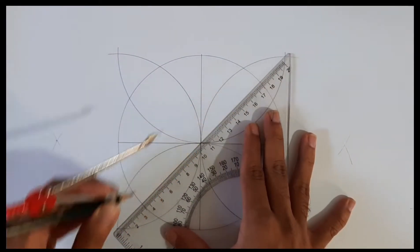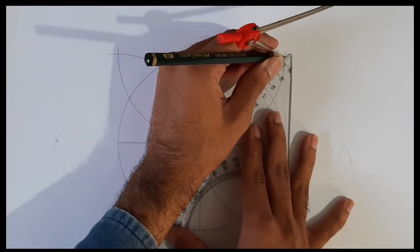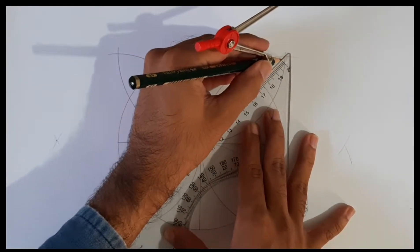This step will create four petals. Joining them diagonally will divide the main circle into eight equal parts.